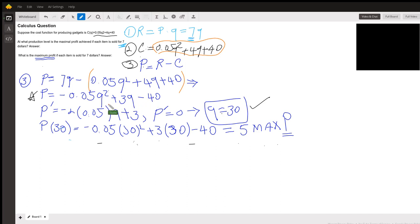For finding the maximum or minimum, you need to take the derivative. P prime equals this. By solving P prime equals 0, Q is 30.